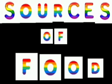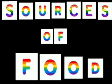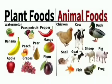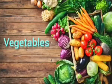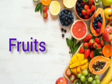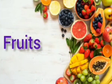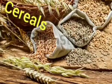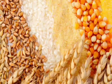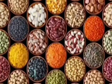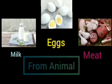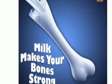Now let us learn about the sources of food. We get food from plants and animals. From plants, we get vegetables like carrot, beans, and peas; fruits like banana, apple, and mango; cereals like rice and wheat; and pulses like dal and green gram.